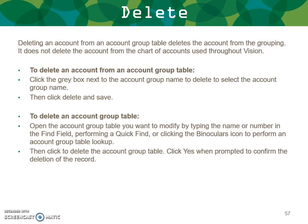To delete an account from an account group table, note this only removes it from the grouping — it does not delete the account from the chart of accounts used in Vision. To delete, click the gray box next to the account group name, select the account group name, then click Delete and Save. To delete an entire account group table, open the table you want to delete, then click Delete and confirm yes when prompted.